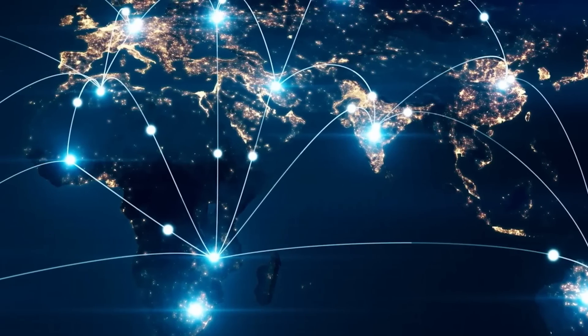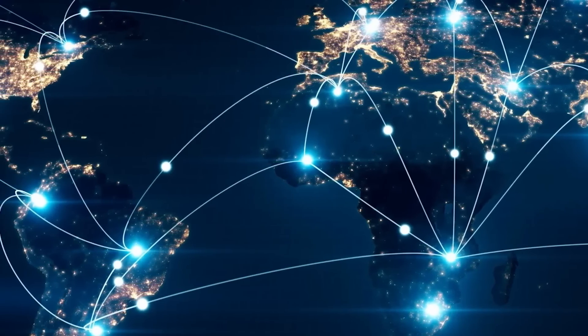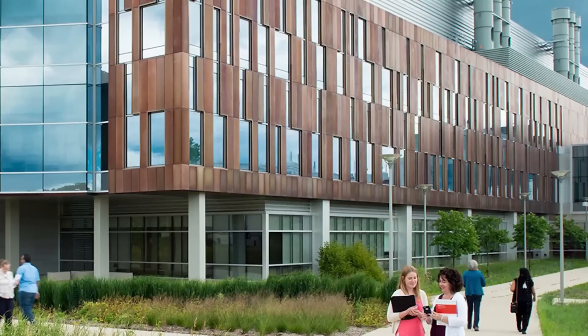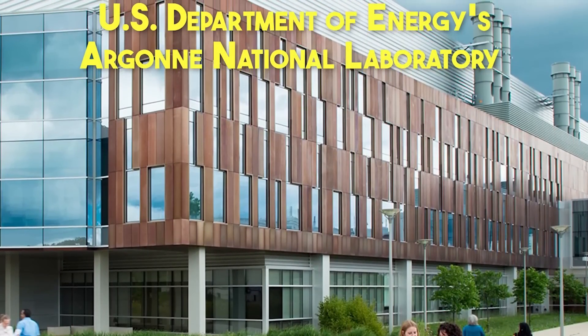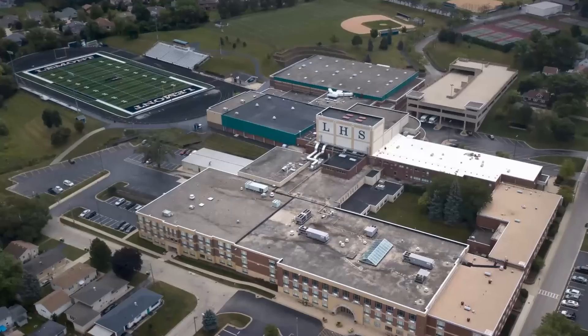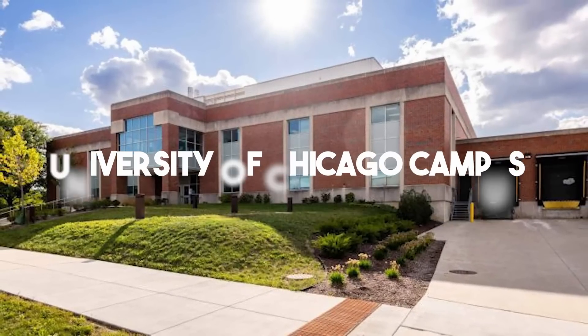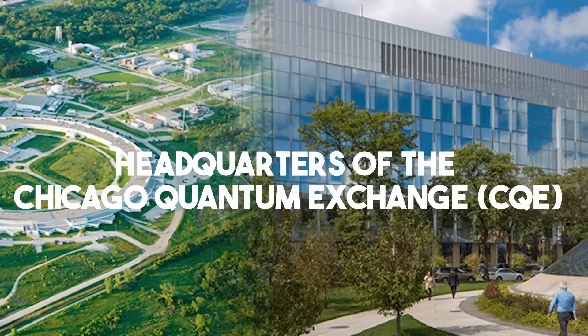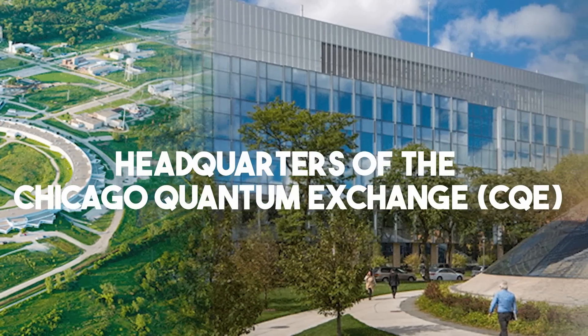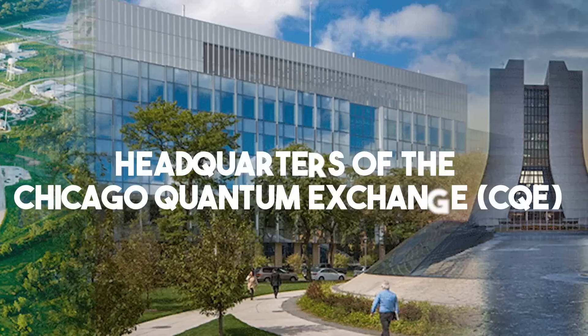This expanded network enables the transmission of quantum-encoded information between various key locations. It connects the U.S. Department of Energy's Argonne National Laboratory in suburban Lamont, with two buildings on the south side of Chicago. These buildings include one on the University of Chicago campus and another at the headquarters of the Chicago Quantum Exchange, CQE, in the Hyde Park neighborhood.